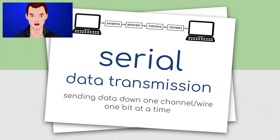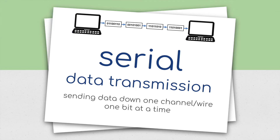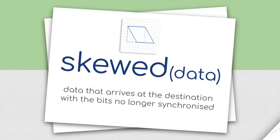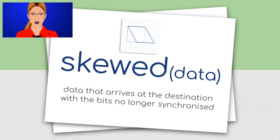Serial data transmission: sending data down one channel or wire one bit at a time. Parallel data transmission: sending data down several channels or wires several bits at a time, usually one byte. Skewed data: data that arrives at the destination with the bits no longer synchronized.